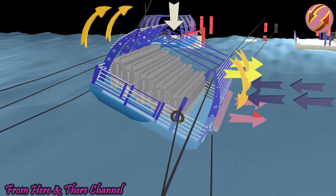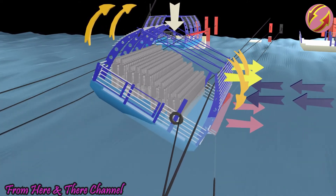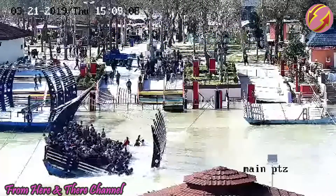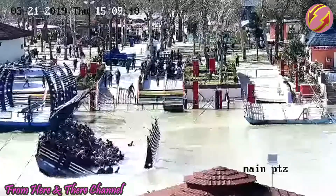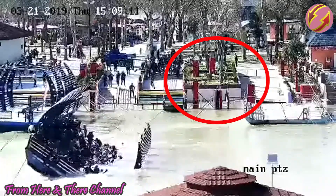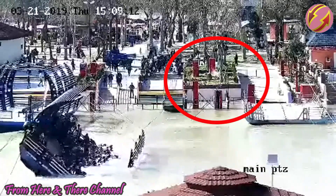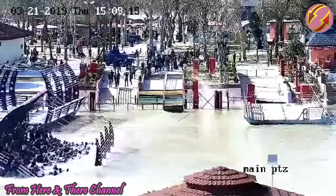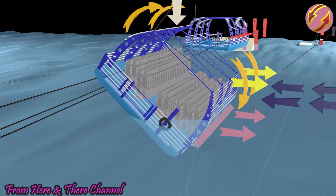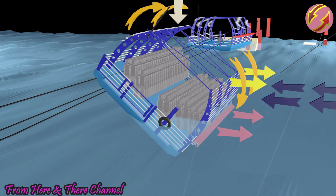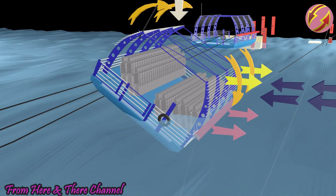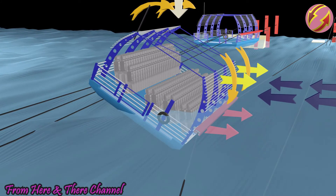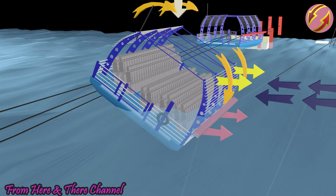After the pulling cable cut off, forces were transferred to the guide cable, and stresses were generated on the columns to which it was connected, causing parts of them to fly off. The torque that tilted the ferry decreased because of the breaking of the pulling cable, causing the ferry to tilt in the opposite direction to return toward the horizontal position.